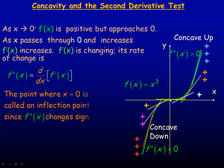This particular point right here is a place where concavity changes — it changes from concave down to concave up. So that's called an inflection point. At that point, the second derivative would be equal to zero and the second derivative changes sign. So that's an inflection point.